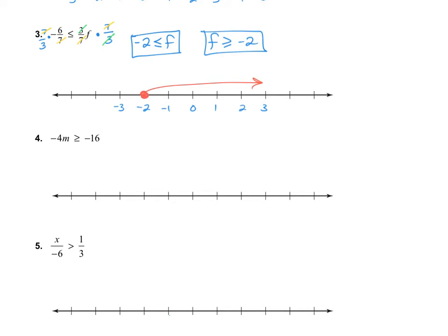Let's take a look at number 4. This time what we're dividing by is a negative — the negative is connected to the 4. So that means we do have to flip our sign around. We end up getting m is less than or equal to — notice I flipped the sign from greater than or equal to, now it's less than or equal to — negative 16 divided by negative 4, which is positive 4. To graph that, we have a closed circle at 4, heading down.